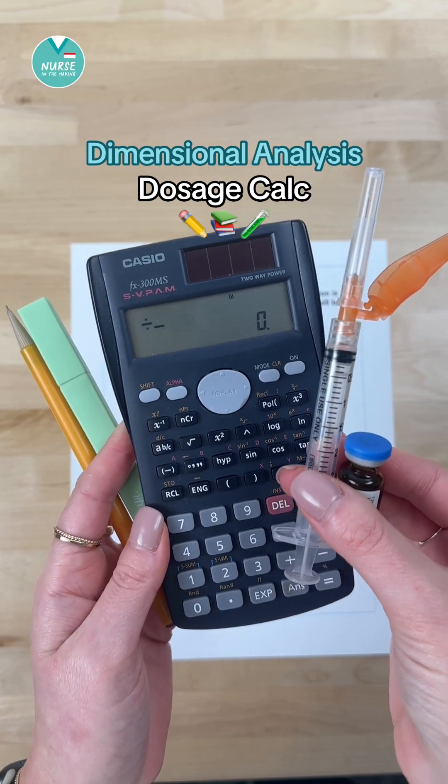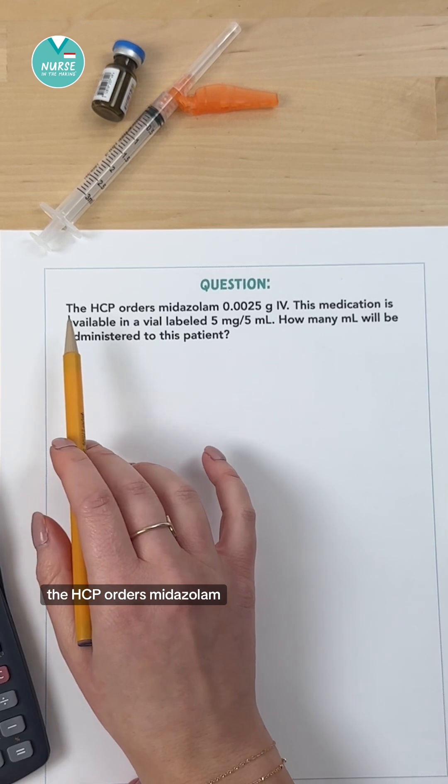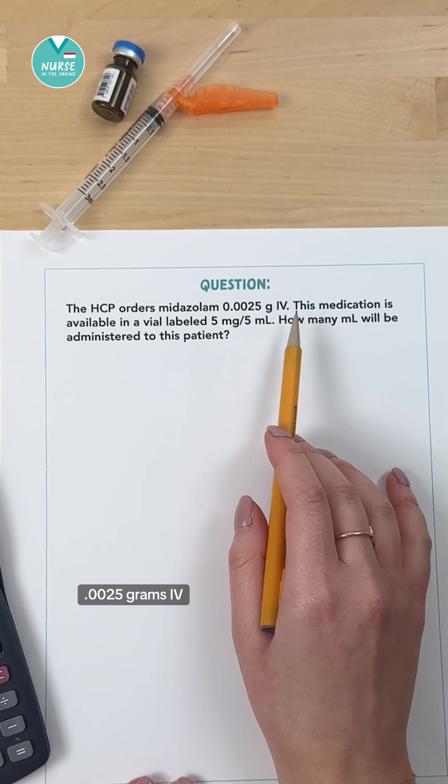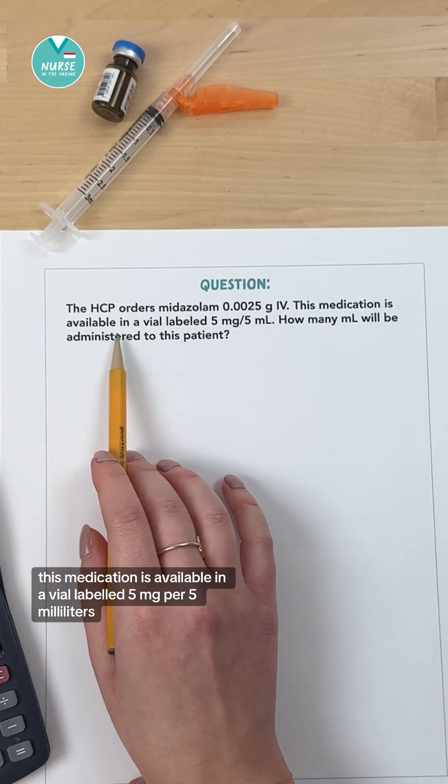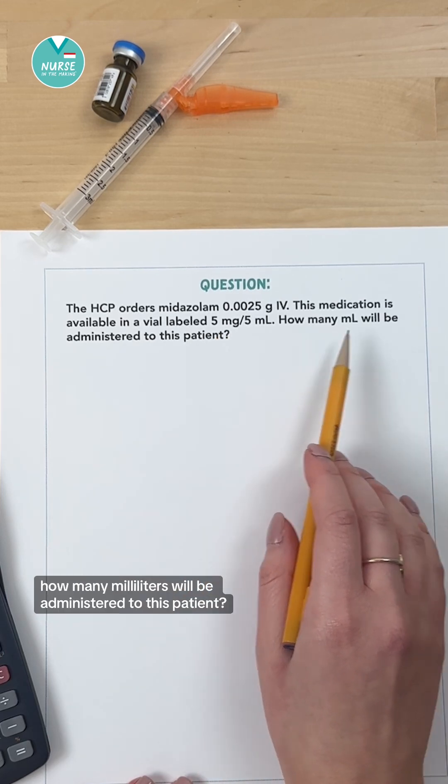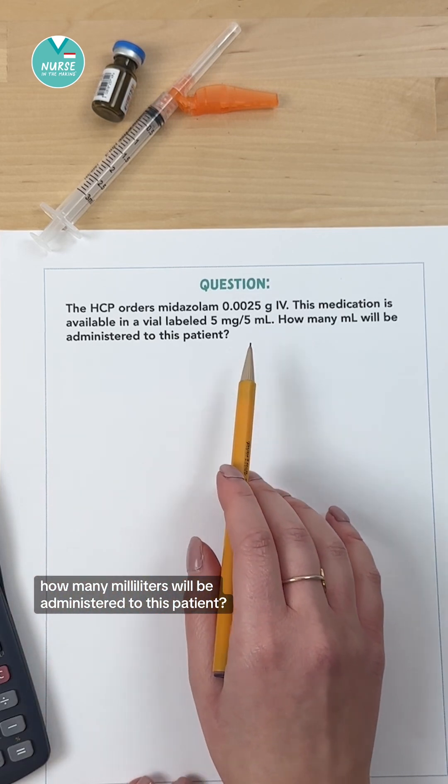Let's do a dimensional analysis dosage calc problem. The HCP orders midazolam 0.0025 grams IV. This medication is available in a vial labeled 5 milligrams per 5 milliliters. How many milliliters will be administered to this patient?